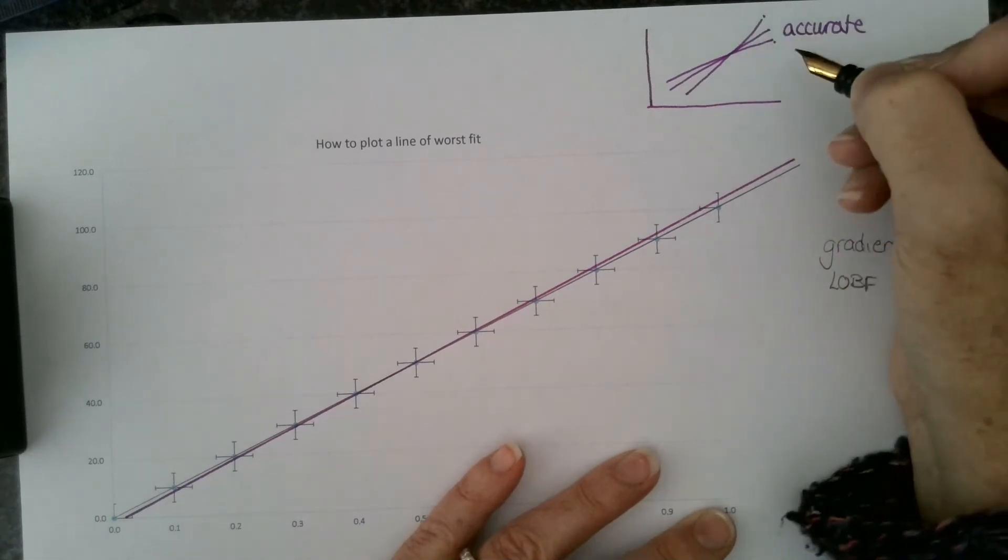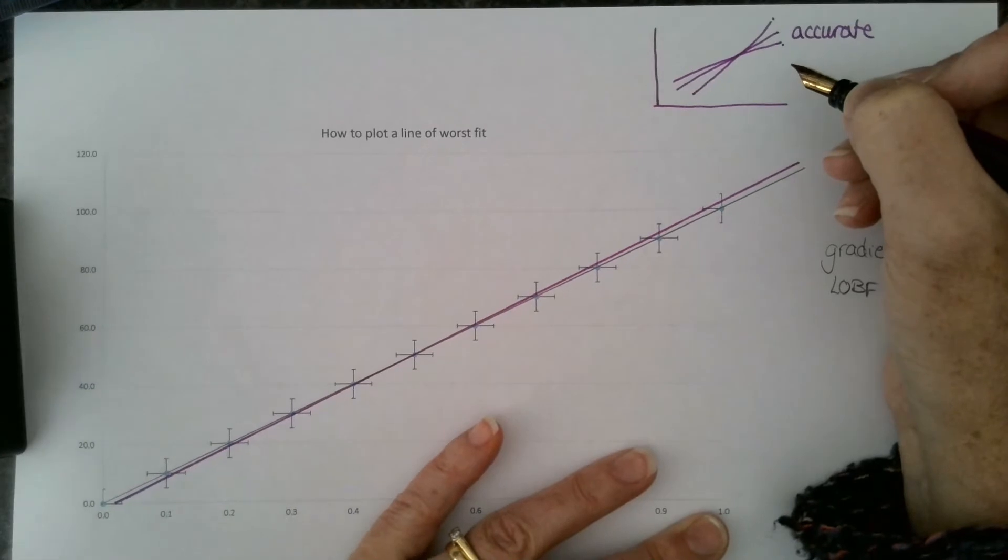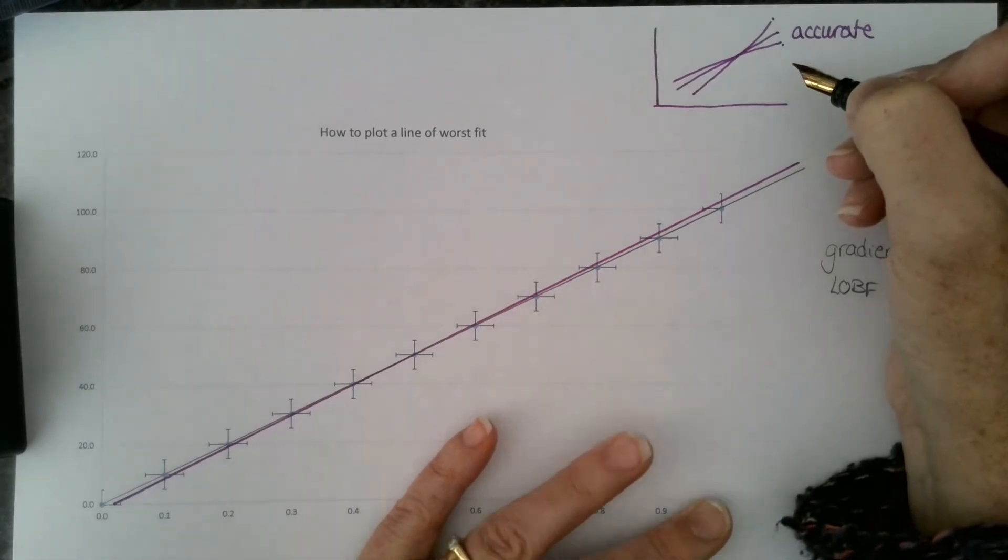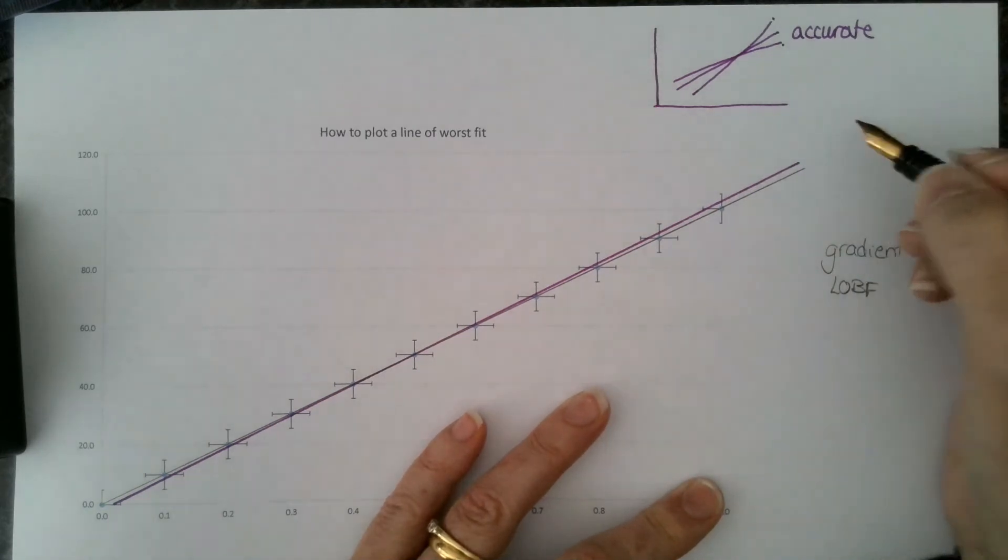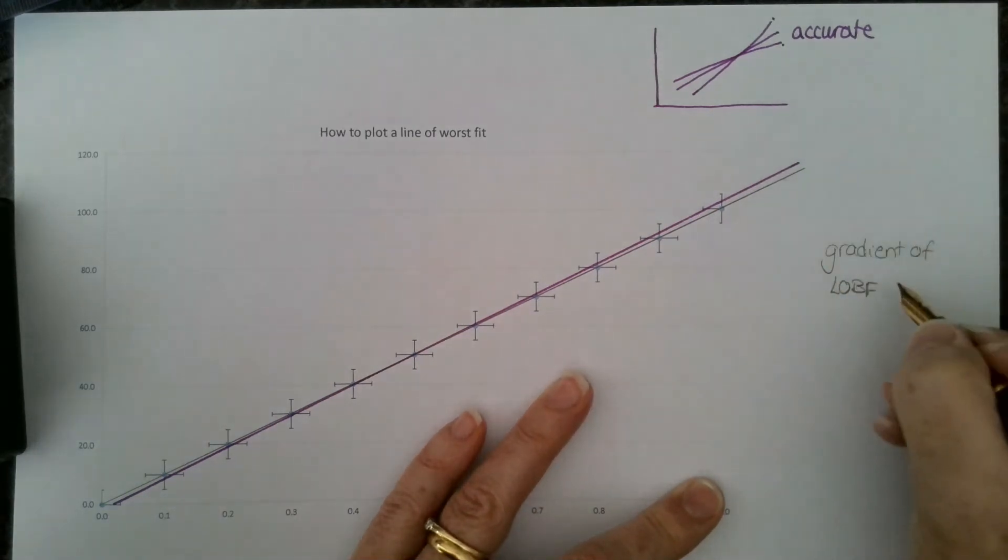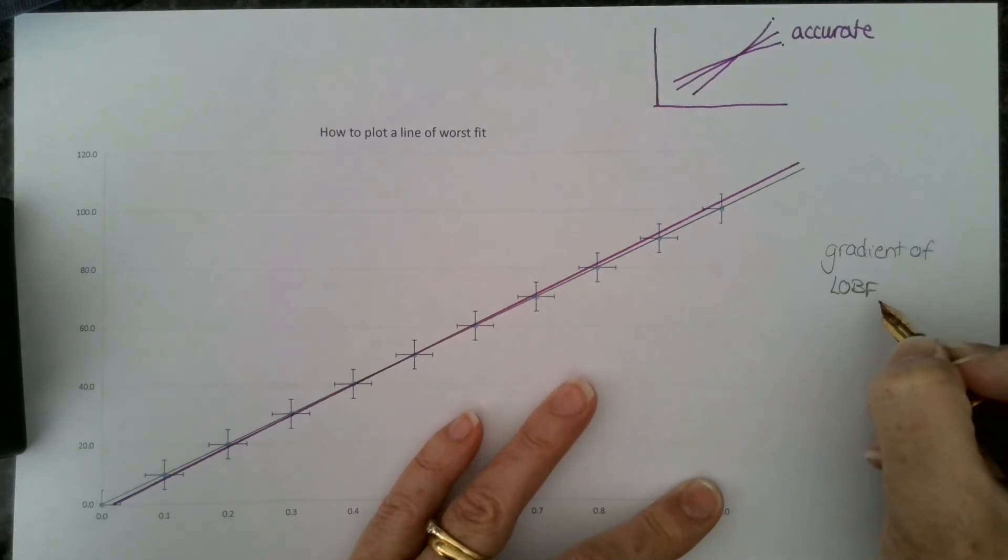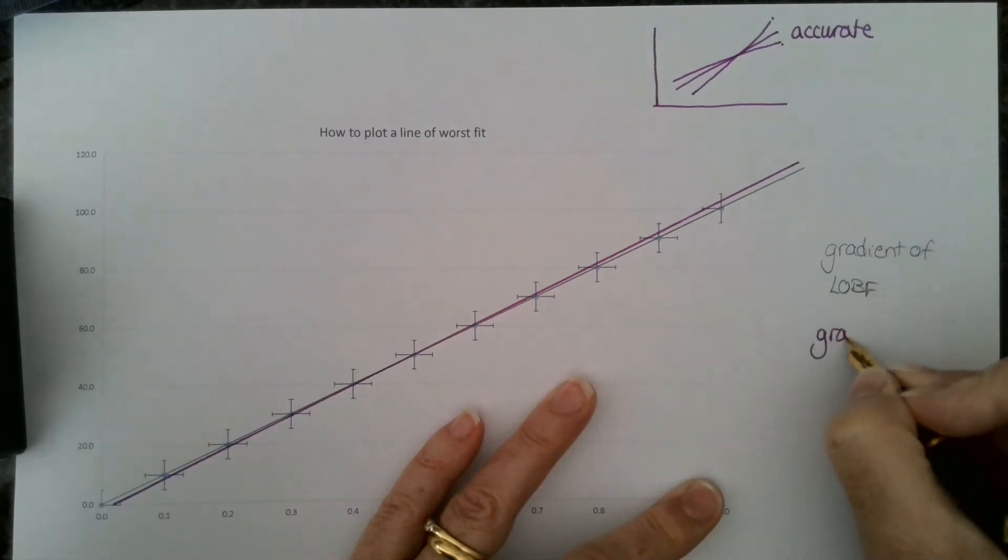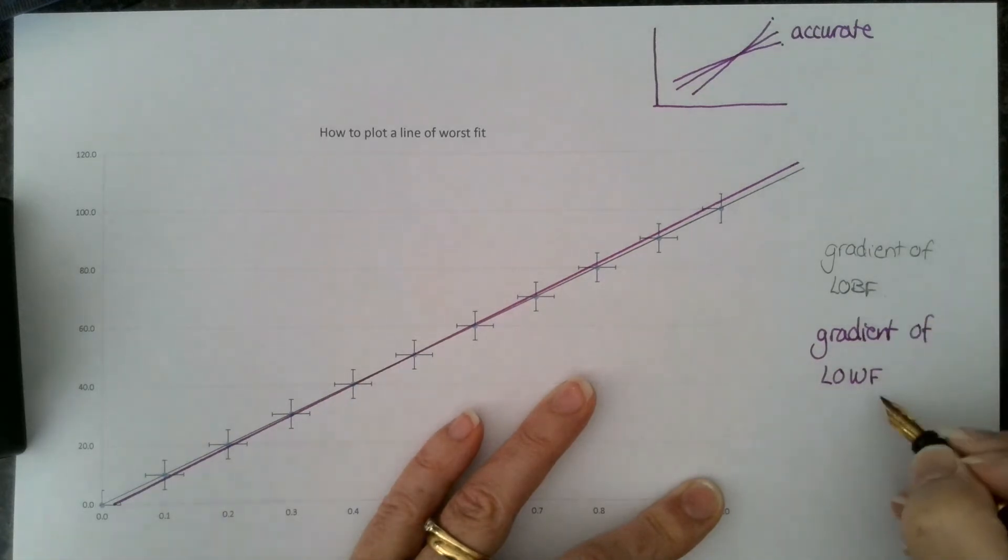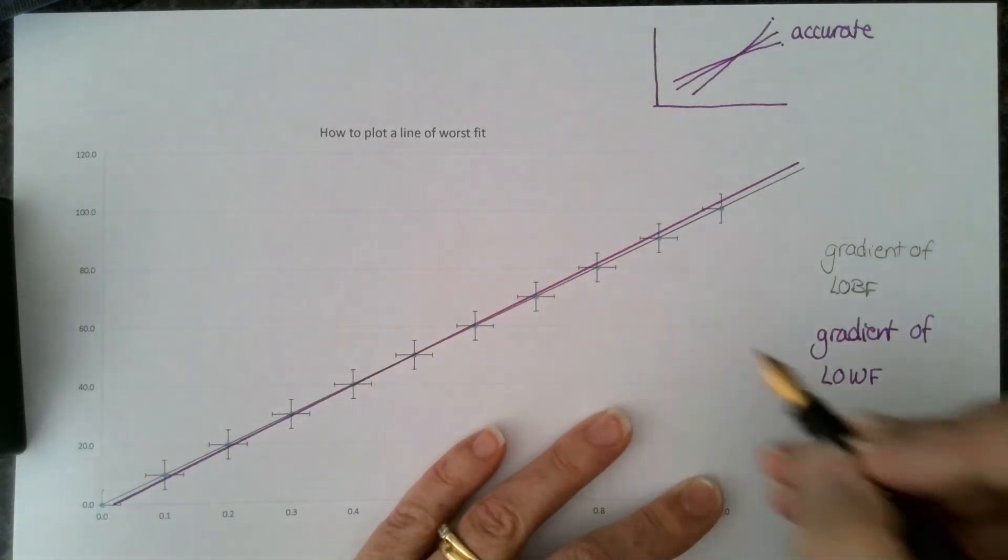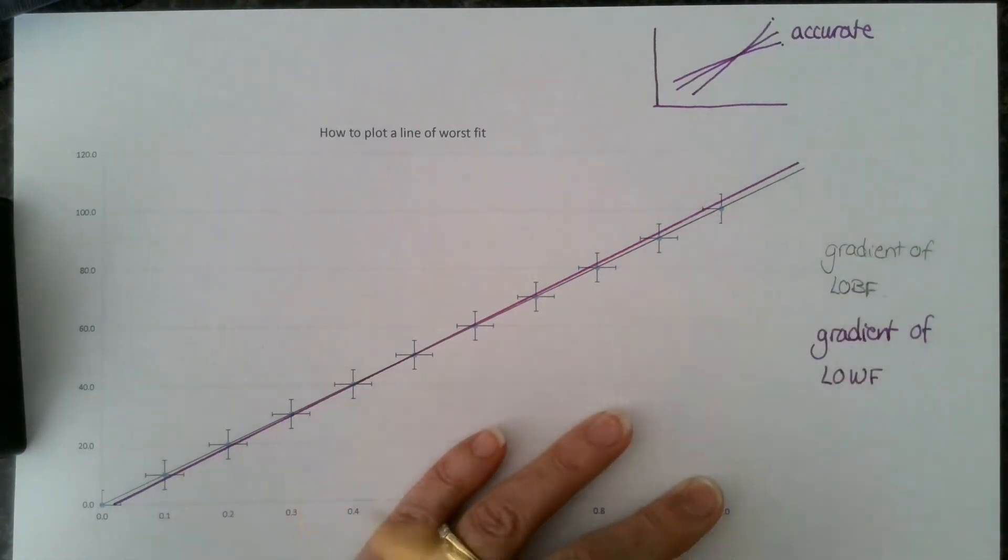So what we can use this for is to find the range, the absolute range for our gradient. Now we don't have to draw two lines of worst fit and do all that calculation. We can calculate the gradient of the line of best fit and the gradient of one of the lines of worst fit, making sure it's going through all your error bars.